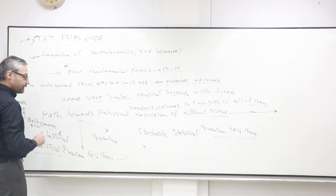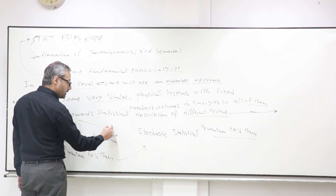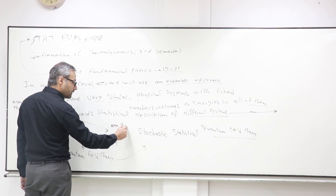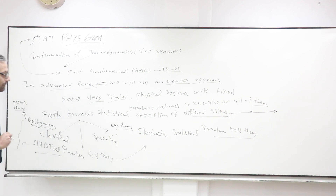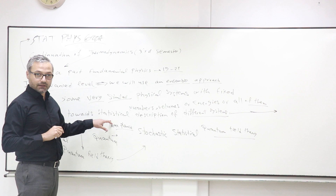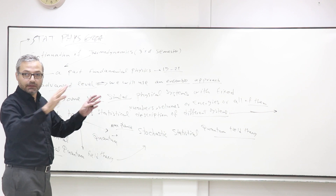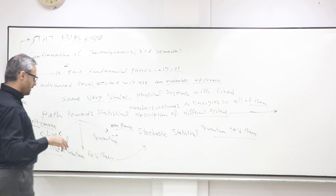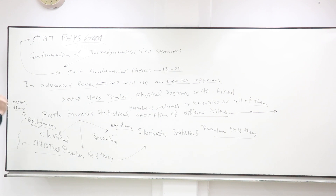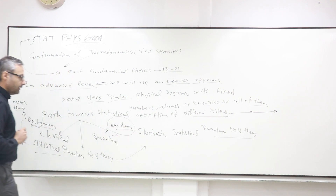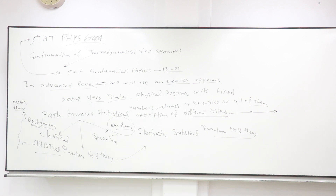Quantum statistical physics actually started when quantum physics started. The first calculation was done by Planck. Planck gave the idea of the photon as the particle that can carry electromagnetic waves. It's surprising to know that Einstein was the first person who used Planck's calculations to find the black body variations. We give credit to Max Planck for starting quantum statistical mechanics.